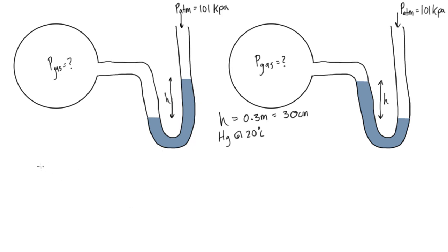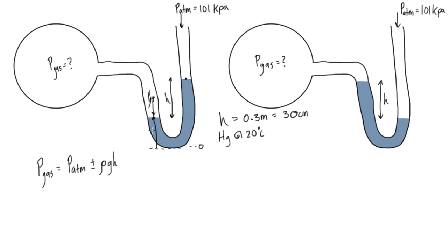P_gas is going to be equal to P_atmosphere plus or minus ρgh. We first consider a reference level and call it zero. The pressure at that reference level on the gas side equals P_gas, because P_gas is pushing straight down — otherwise this column of fluid would move up or down. At the same level in the same fluid on the other side, we also have that same pressure, P_gas.